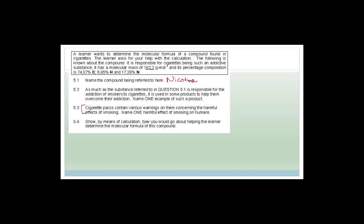First, we use the percentage composition to work out the empirical formula — the basic ratio of carbons, hydrogens, and nitrogens. Assuming 100 grams: carbon is 74.07 g, hydrogen is 8.65 g, and nitrogen is 17.28 g. We divide each by their molar masses: carbon by 12, hydrogen by 1, nitrogen by 14. Carbon gives 74.07 ÷ 12 = 6.17, hydrogen stays 8.65, and nitrogen gives 17.28 ÷ 14 = 1.23.